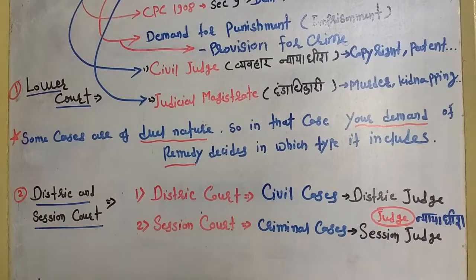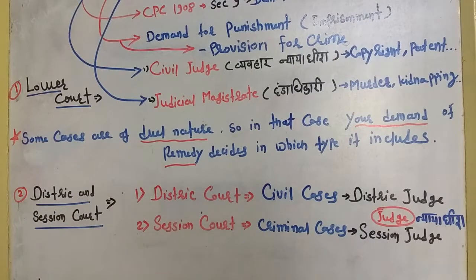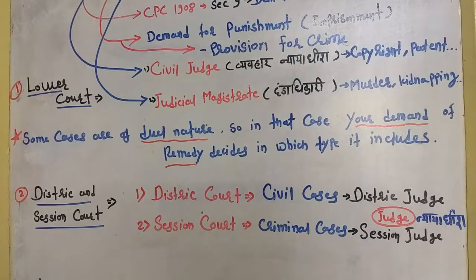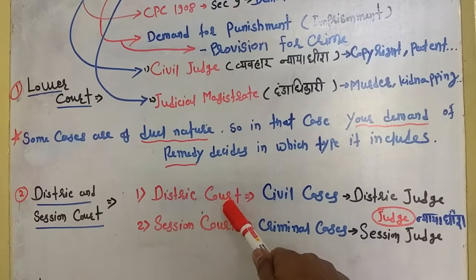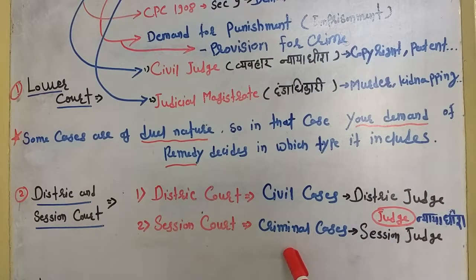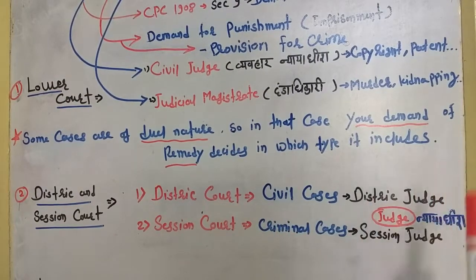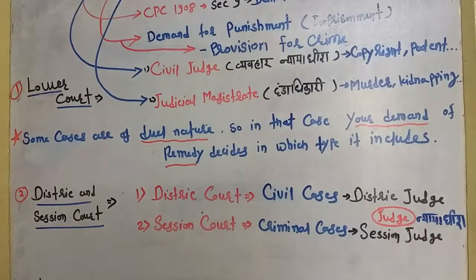At the next, second layer — the district level — you find the District and Sessions Court, called 'Jilla aur Satra Nyayalaya' in Hindi. At the district level, if you have a civil case filed, it will be characterized by the district court and the presiding officer will be the district judge, called 'Jilla Nyayaadhish'. If you have a criminal case filed, it will be heard in the sessions court and the presiding officer will be the sessions judge, called 'Satra Nyayaadhish'.